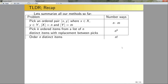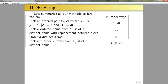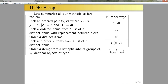If I pick and order k items from a list of n distinct items, that's P(n, k) = n! / (n−k)! — my ordered-without-replacement problem. Another permutation-type problem is ordering n items from a list split into m groups of k_i identical objects of type i — the 'banana' or 'supercalifragilisticexpialidocious' type problem — using the multinomial coefficient n! / (k_1! × k_2! × ⋯ × k_m!).